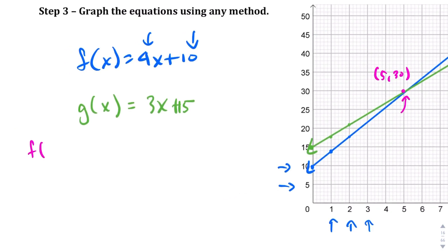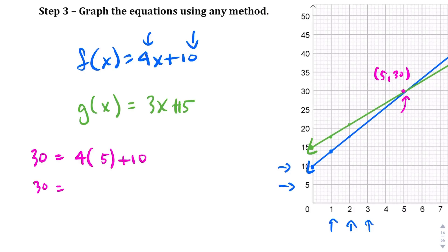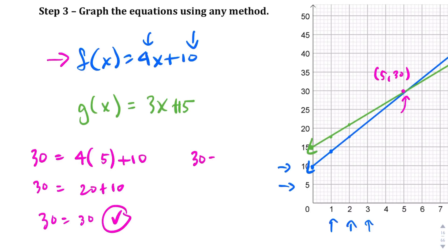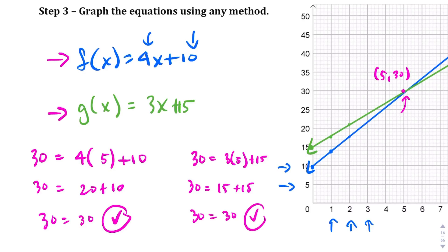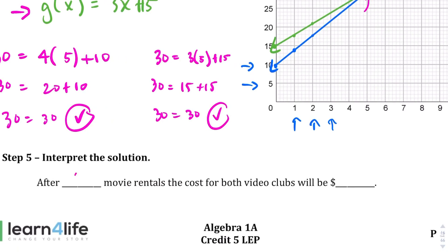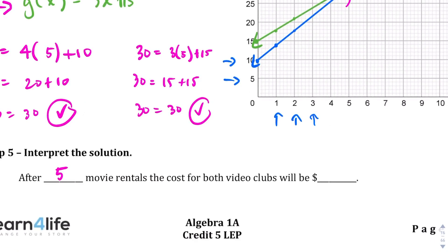Checking f(5): 30 = 4(5) + 10 → 30 = 20 + 10 → 30 = 30. True. Checking g(5): 30 = 3(5) + 15 → 30 = 15 + 15 → 30 = 30. True. So after 5 movie rentals, both video clubs cost the same: $30.